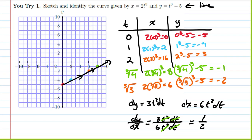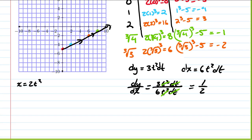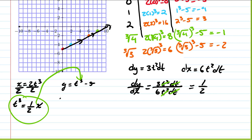We can also eliminate the parameter directly. We have x equals 2t cubed, so t cubed equals one half x. Substituting into y equals t cubed minus 5 gives y equals one half x minus 5 — exactly the equation of that line with slope one half. When we look at parametric equations correctly, our intuition is helpful, but we must remember they're functions of a third variable, and that parameter affects how x and y relate to each other.